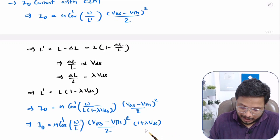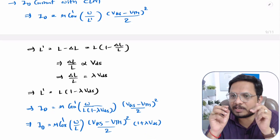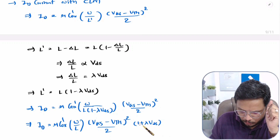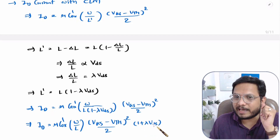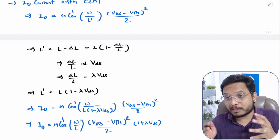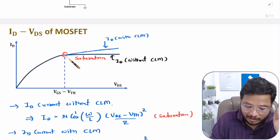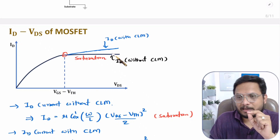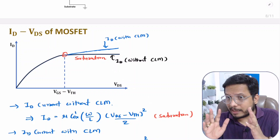So the final drain current equation with channel length modulation is: ID = μ·Cox' · (W/L) · (VGS − VTH)² / 2 · (1 + λ·VDS). The original ID equation is multiplied by the additional term (1 + λ·VDS), which accounts for channel length modulation. This additional term due to lambda·VDS is what changes the characteristics. I hope you understood this — if you have any questions, please note them in the comment section. Thank you for watching. Bye.